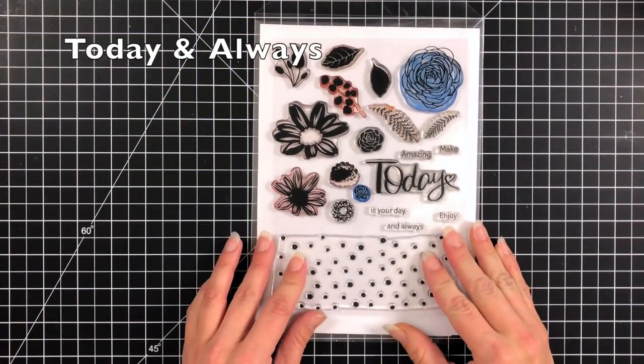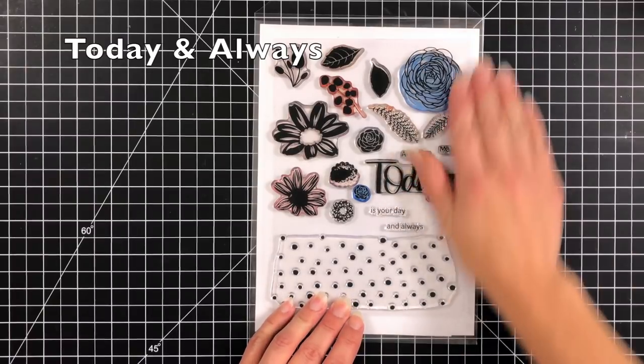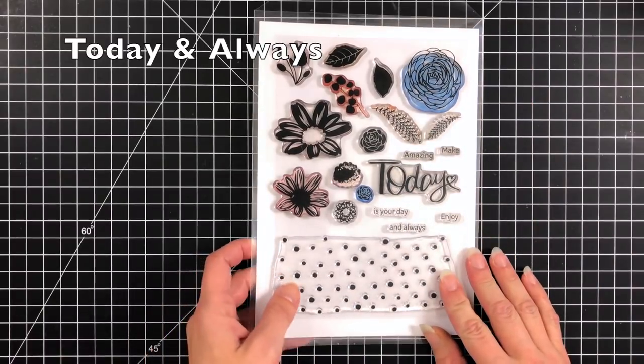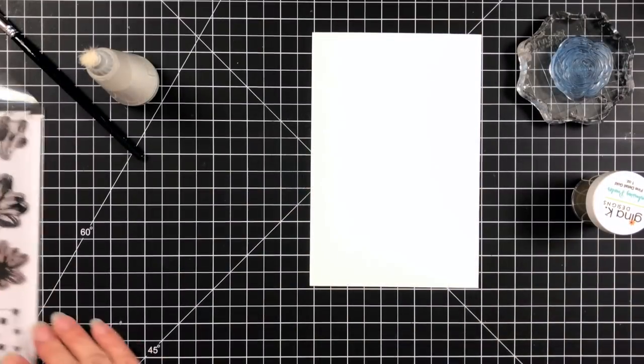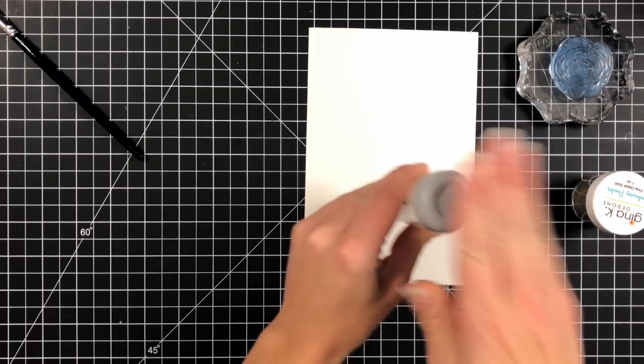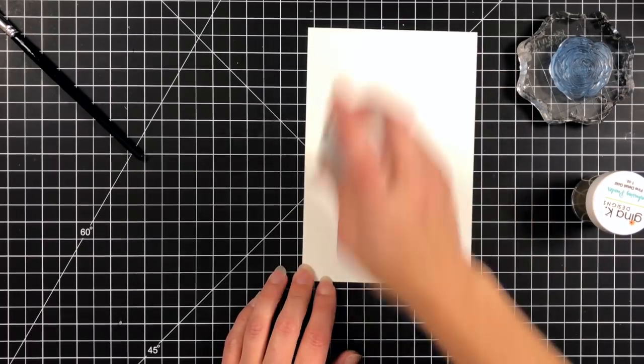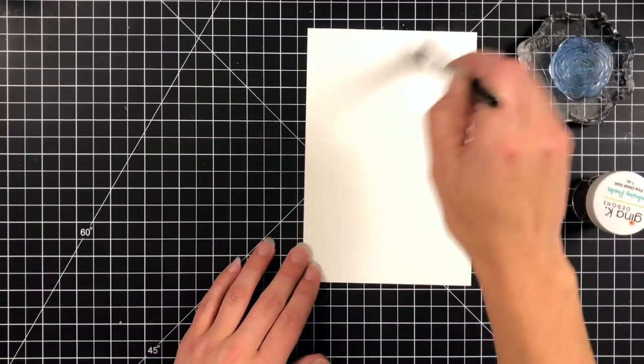Here's a look at the stamp set that I'll be using. It is called Today and Always and you can see there are some great stamp images on the stamp set. You have a polka dot background and then lots of floral building images.